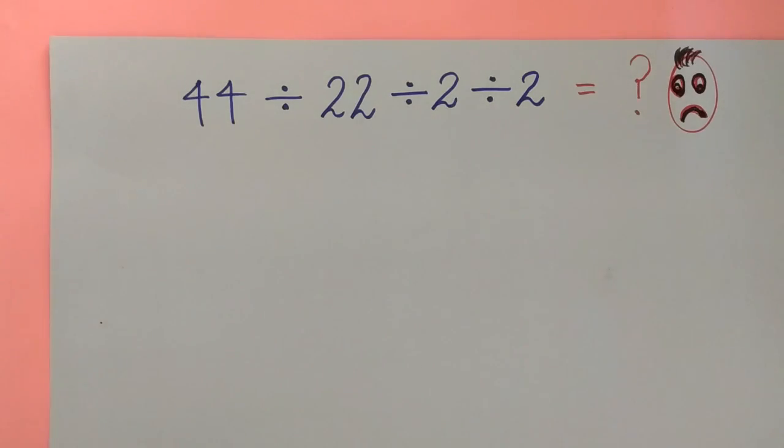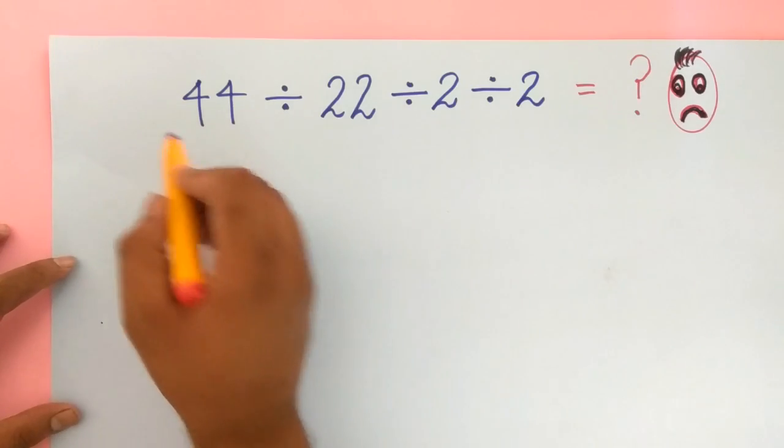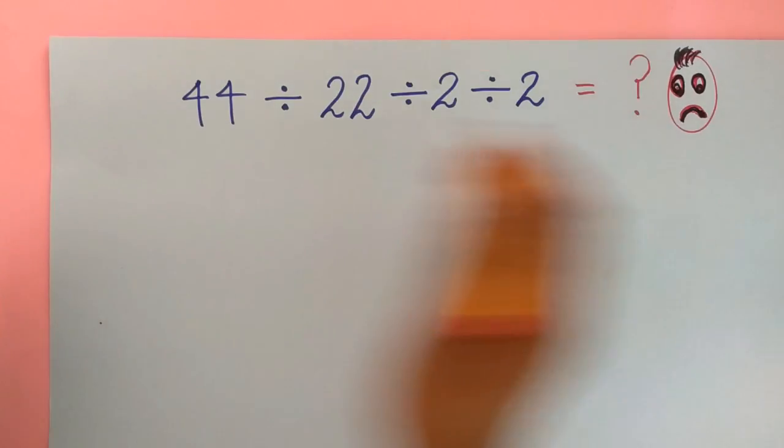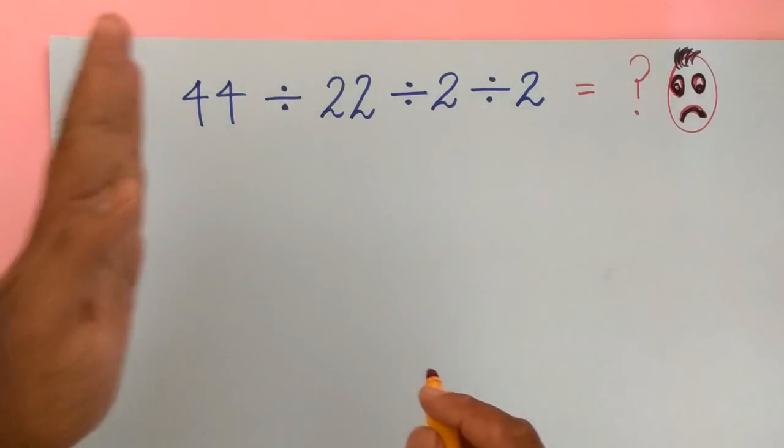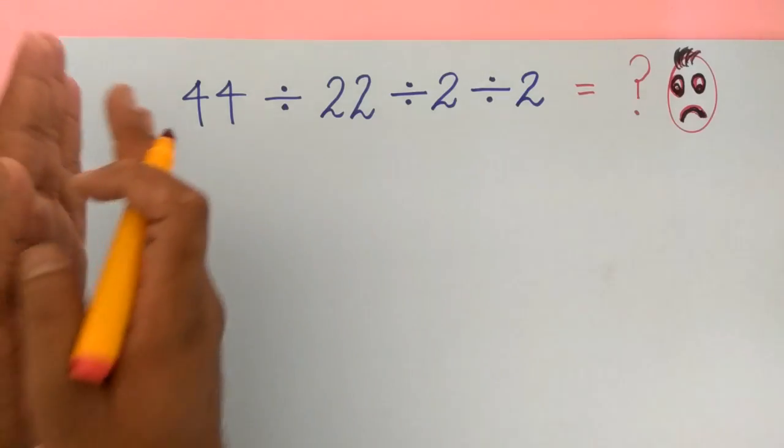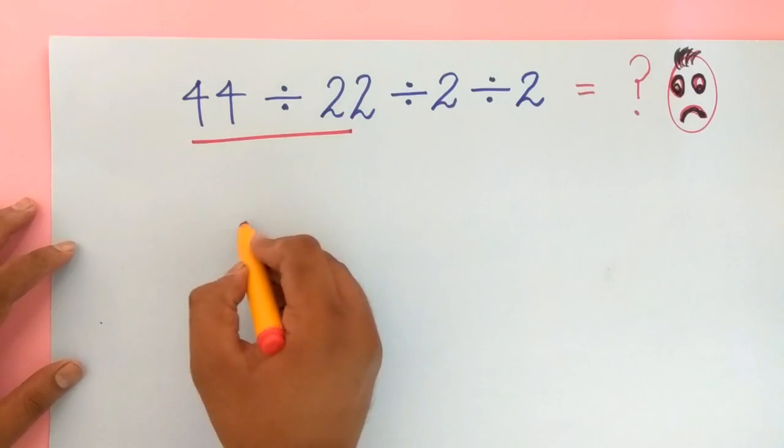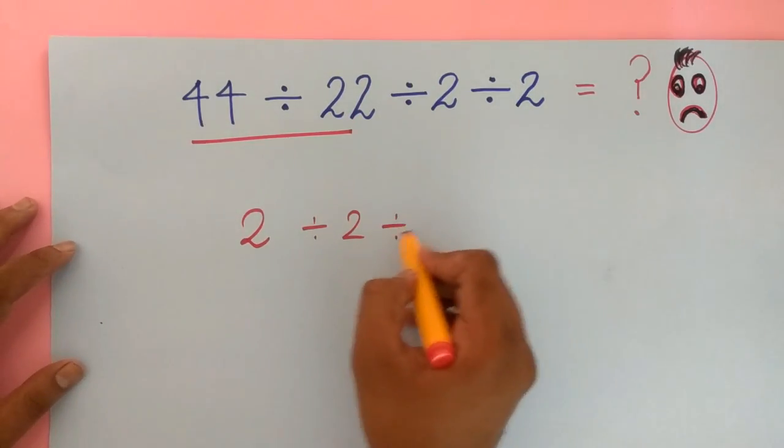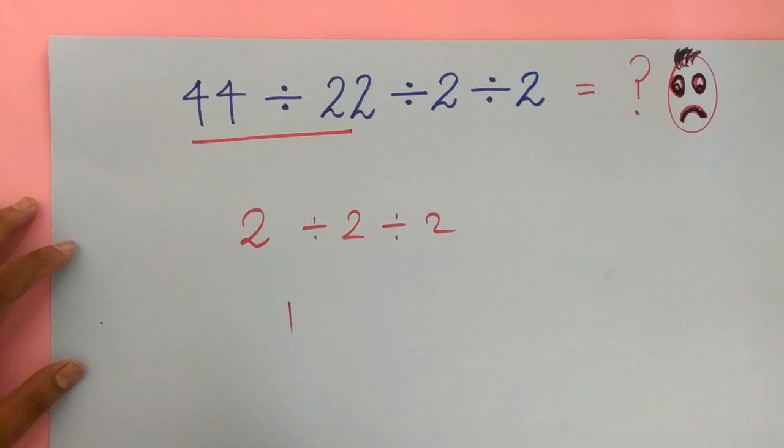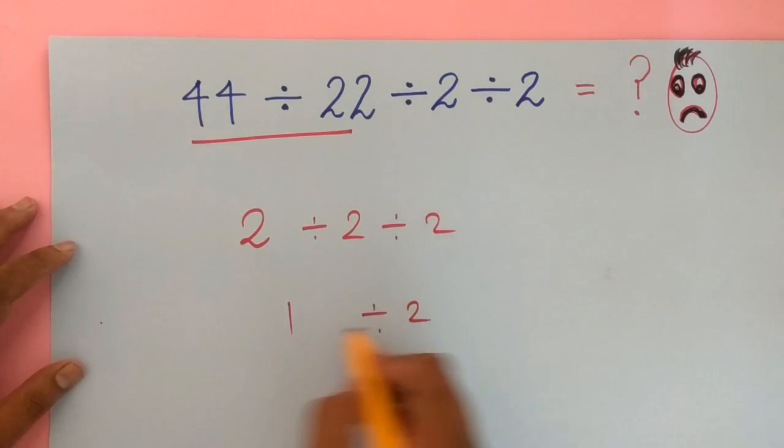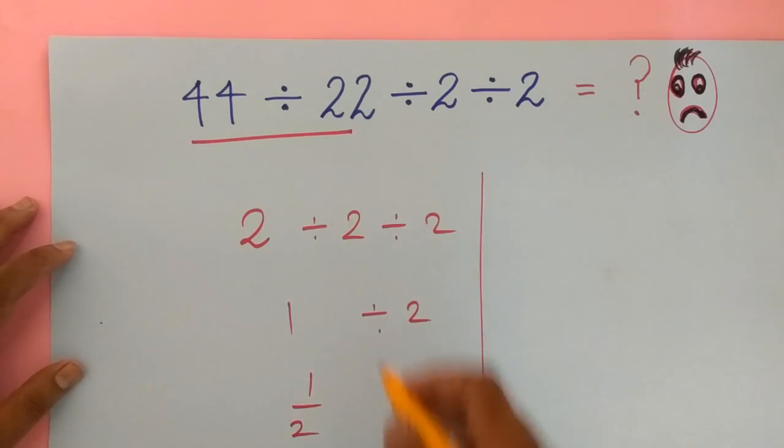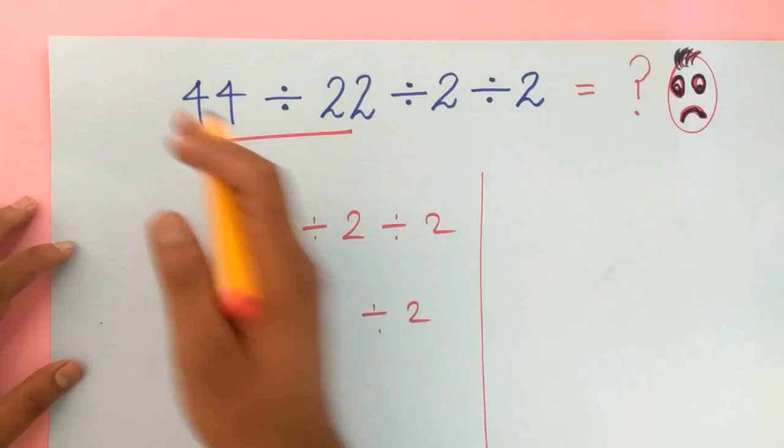Your time is up guys. Let's have a look at the solution. You can solve it left to right or right to left. Let's start: 44 divided by 22 is 2, 2 divided by 2 is 1, again divided by 2 is 1 over 2. And if you start from right to left, what's our